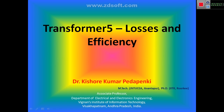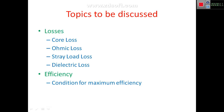Hi friends, let us discuss the fifth part of transformers: losses and efficiency. The topics to be discussed are losses — core loss, ohmic loss, stray load loss, and dielectric loss — and under efficiency, we need to see the formula for efficiency and the condition for maximum efficiency.